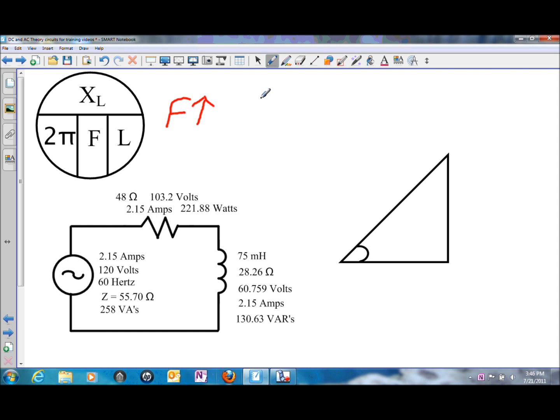Looking at those relationships and how frequency affects an AC circuit, it's going to be affecting the inductive reactance. So if you increase the frequency in a circuit, anytime you increase F or L, that means X of L is going to go up. So if you increase the frequency and the inductive reactance goes up, then that will also affect impedance.